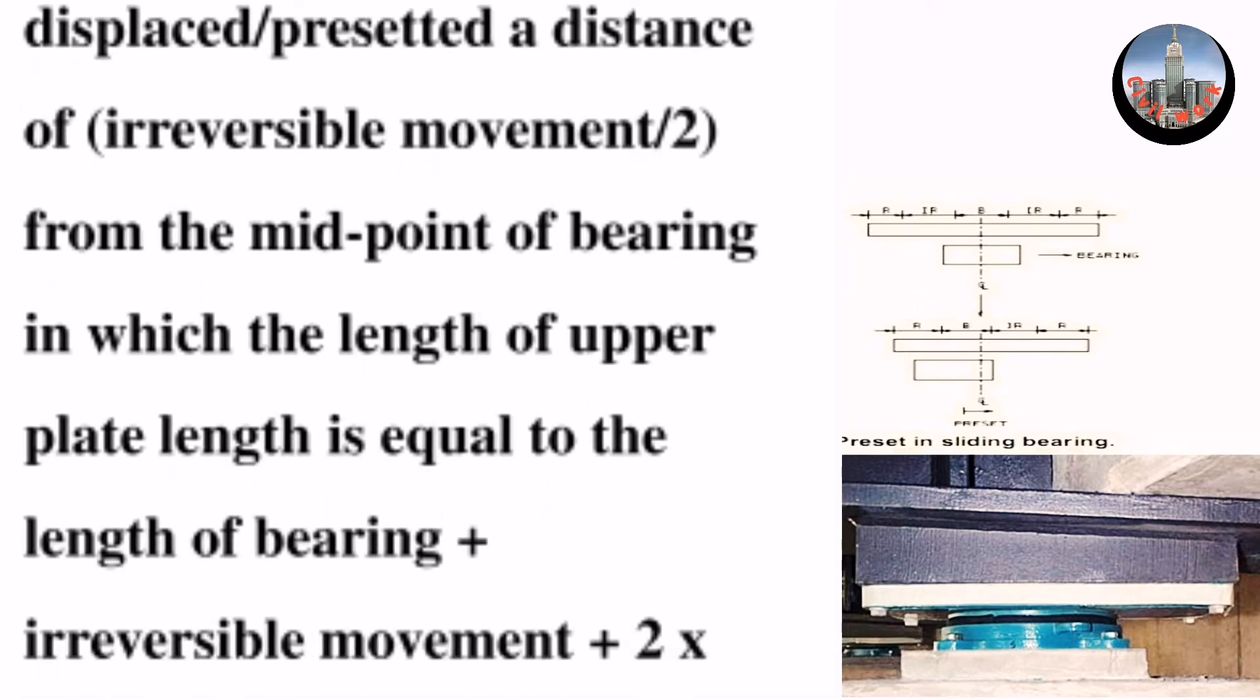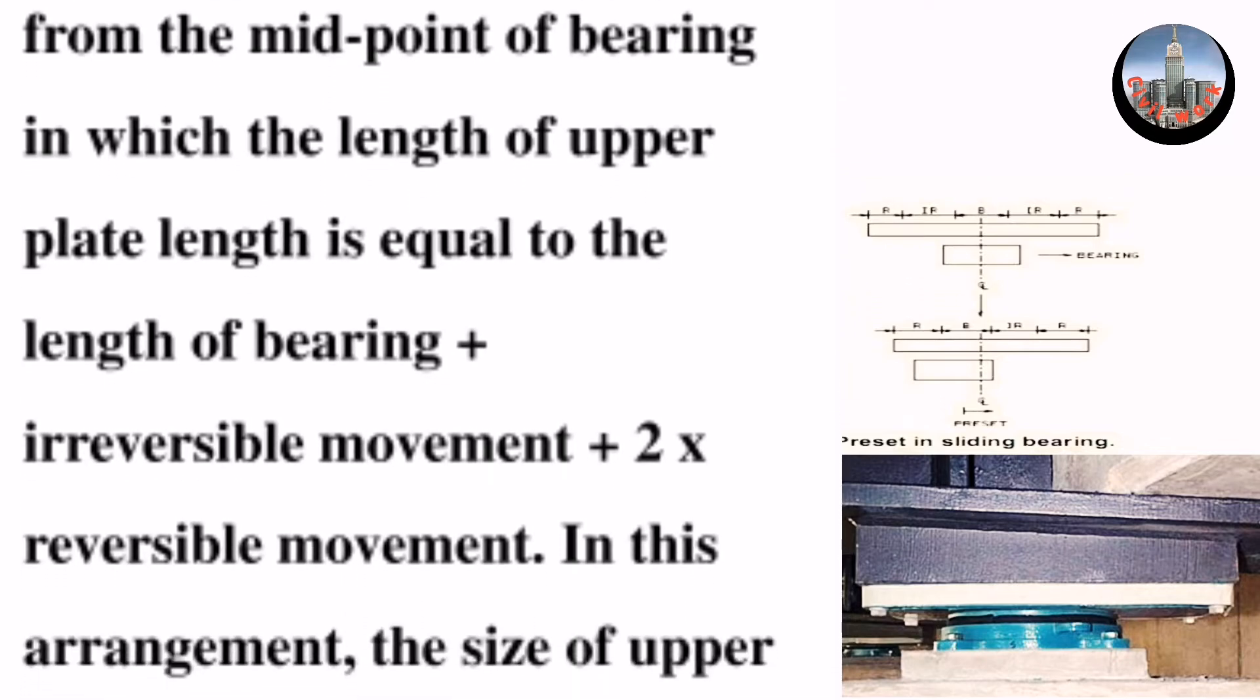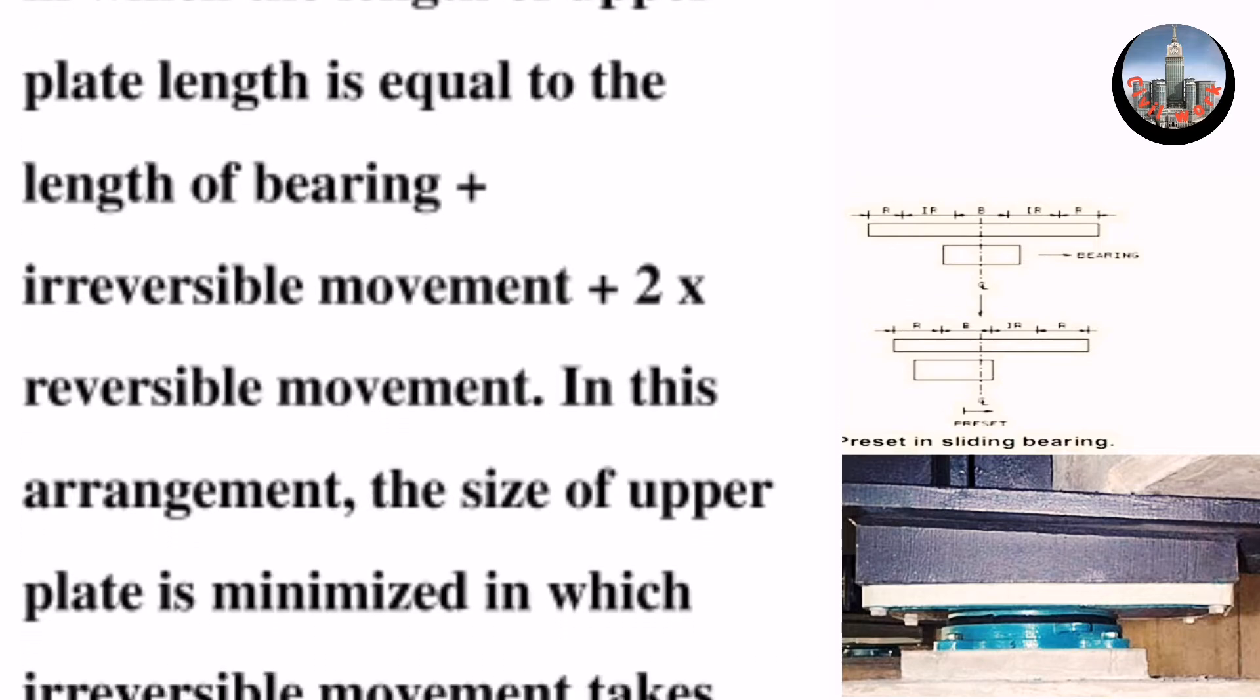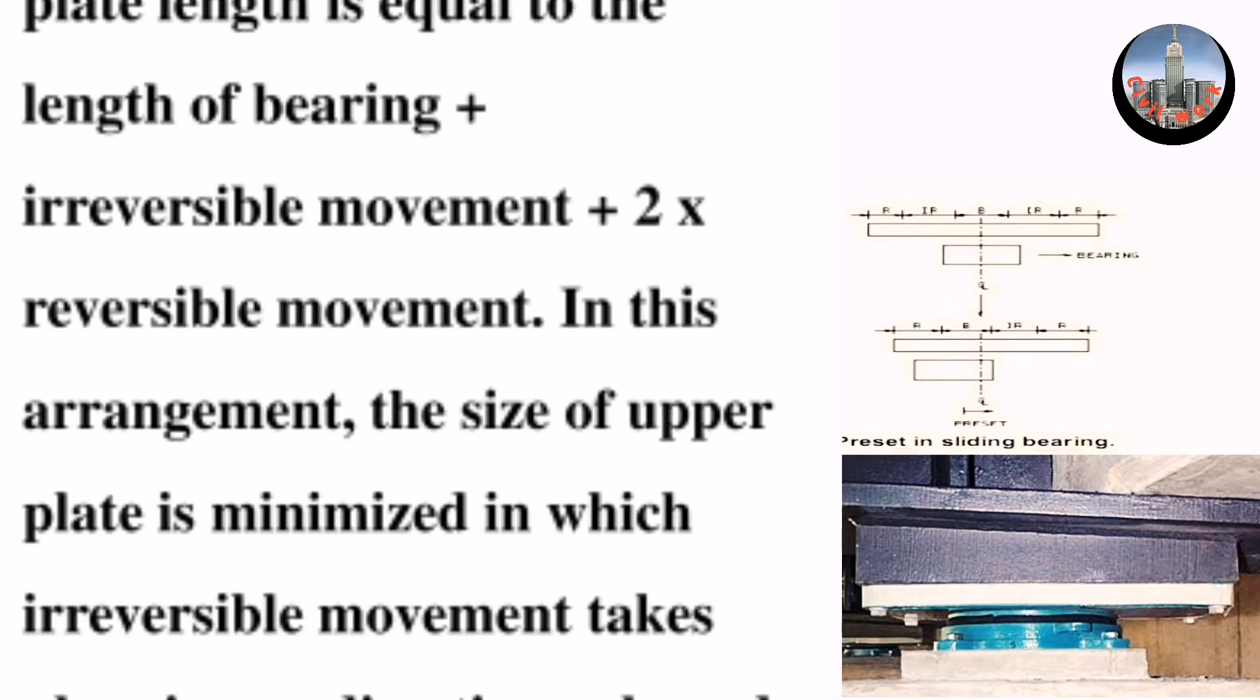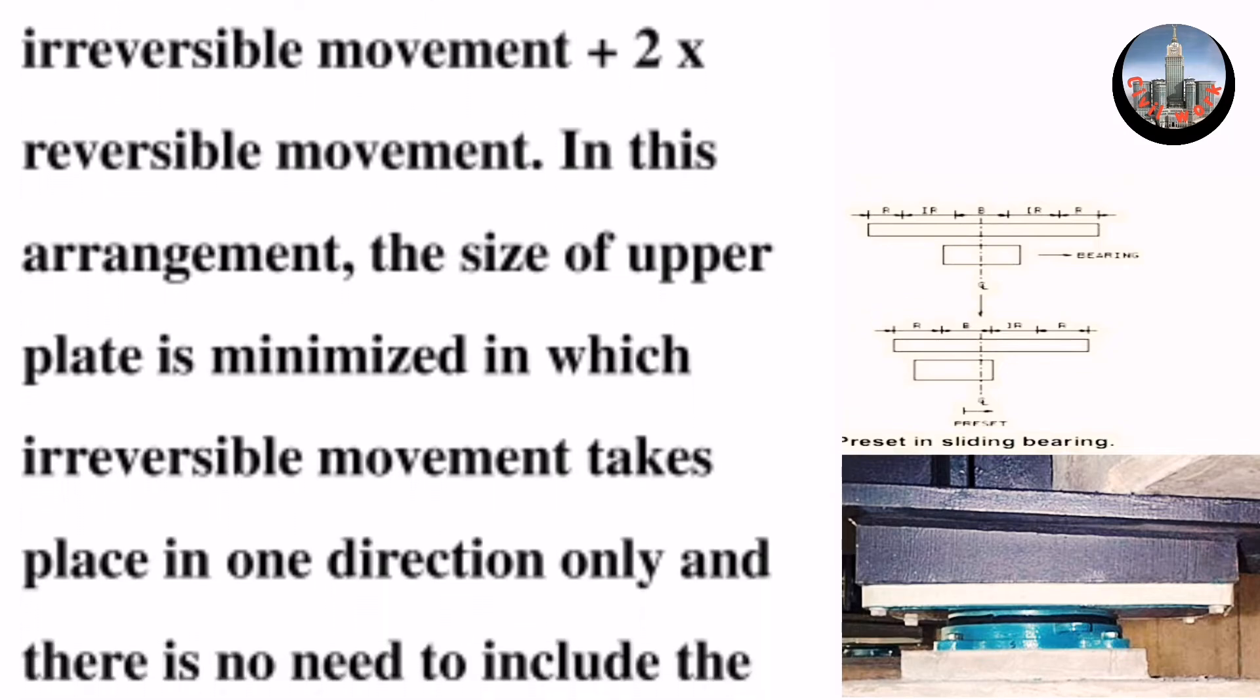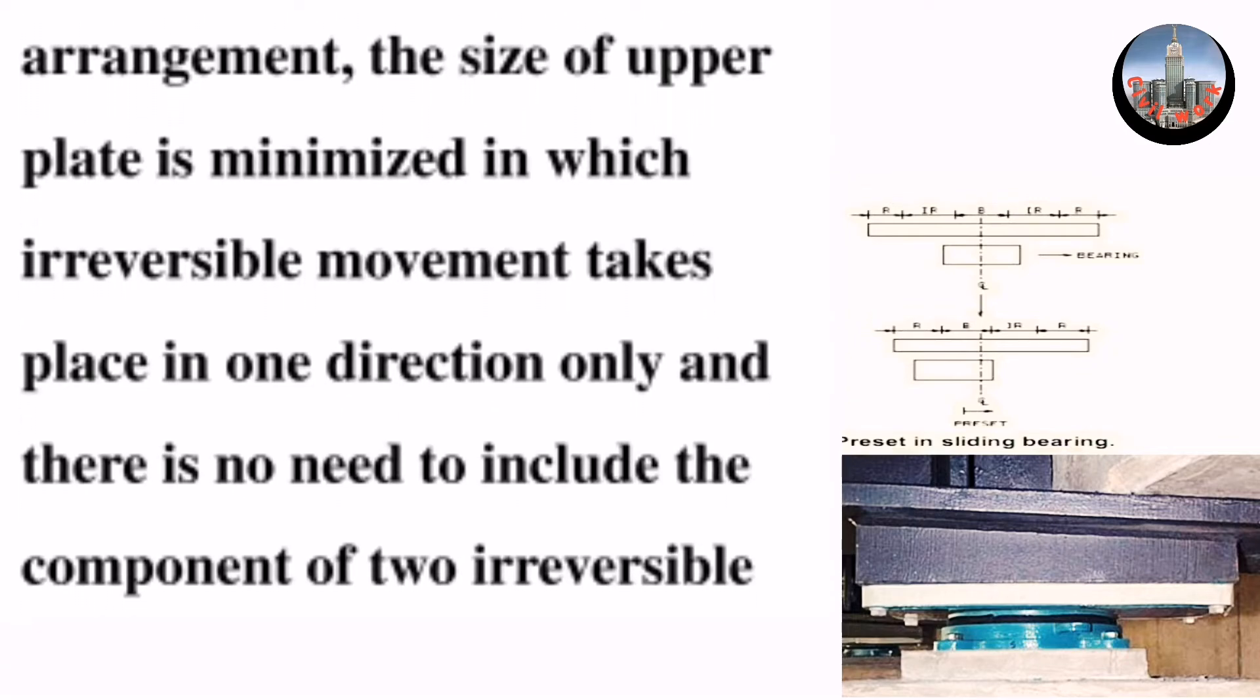In which the length of upper plate is equal to: length of bearing + irreversible movement + 2 × reversible movement. In this arrangement, the size of upper plate is minimized in which irreversible movement takes place in one direction only.